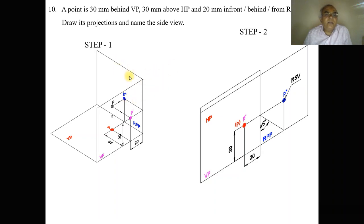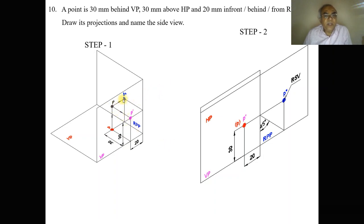Behind RPP means we look from the right side. The right profile plane is there, and the point is behind it. When you look from the front view, you can see the distance above HP projected onto the vertical plane, giving this point. The distance above HP and the distance behind RPP — 20 mm — are both projected onto the vertical plane.